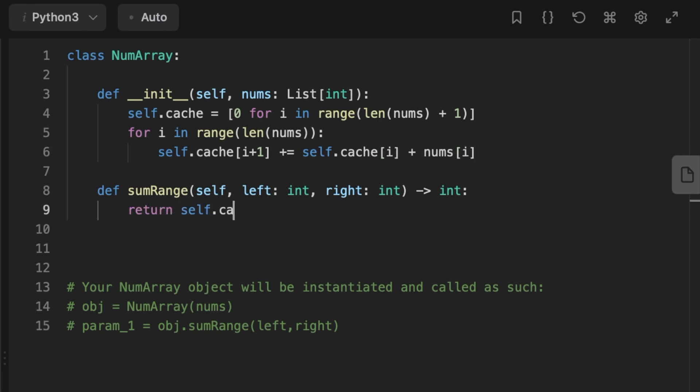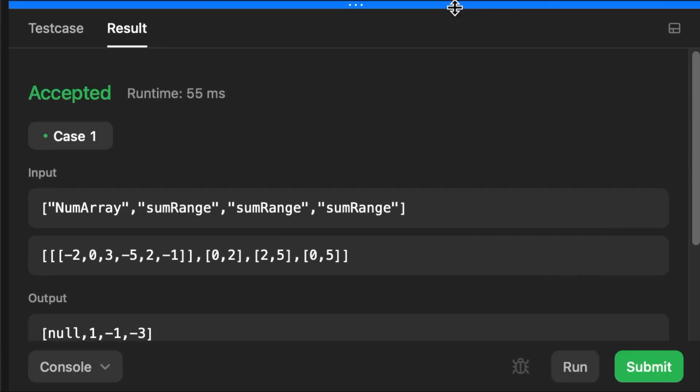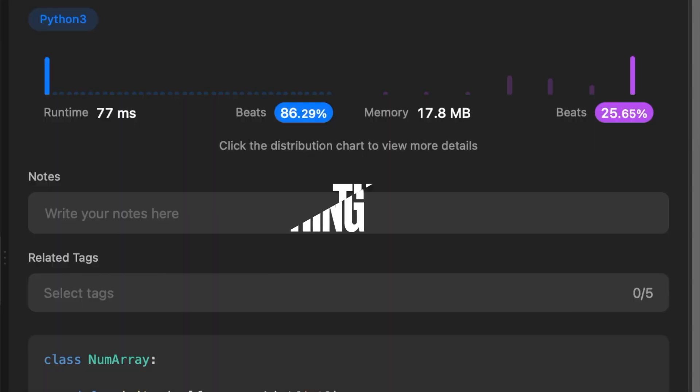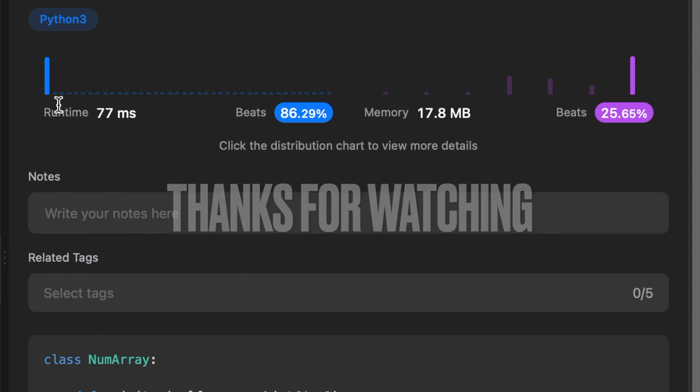For the sumRange method that takes left and right indices as parameters, we return cache[right + 1] - cache[left]. That's how we return the sum of elements in nums from left to right. Thanks for watching, see you in the next video!